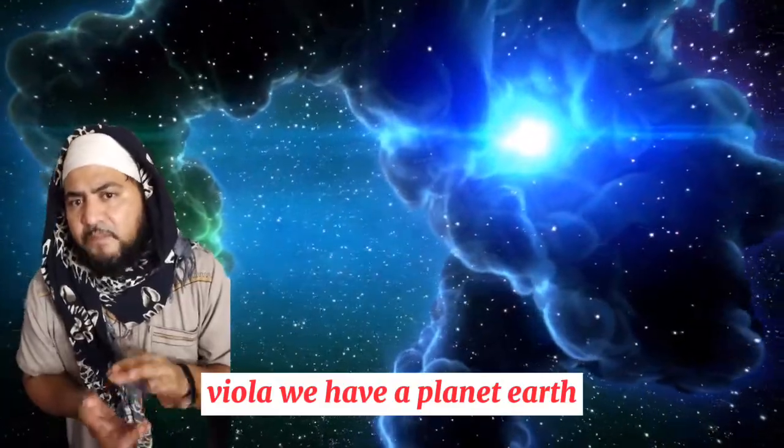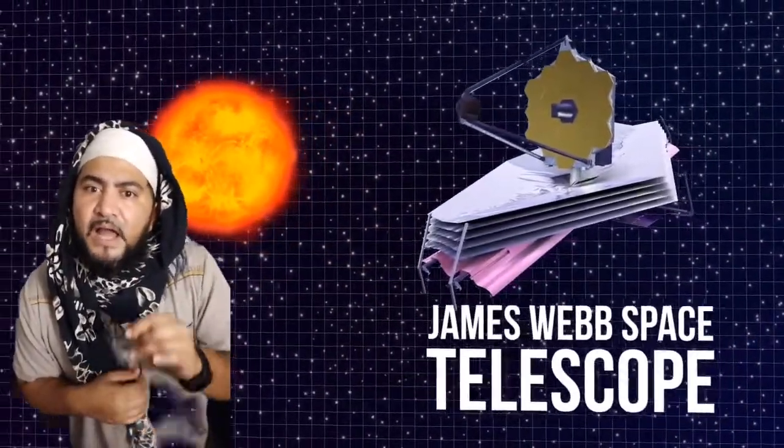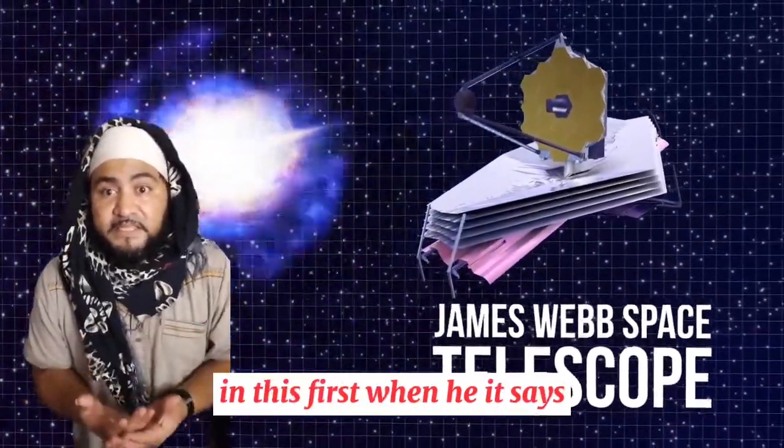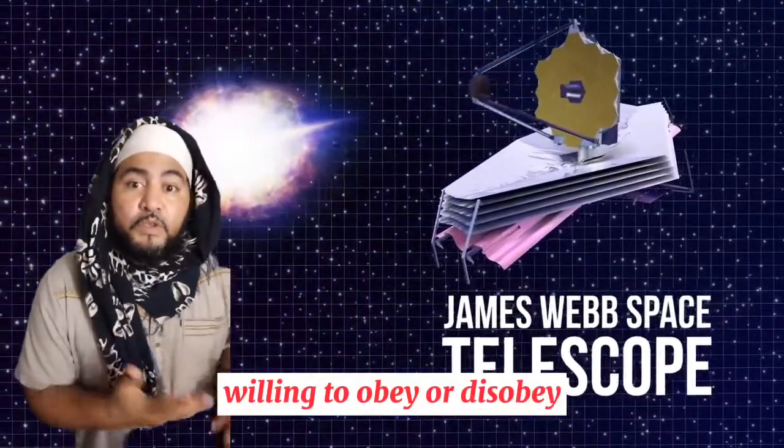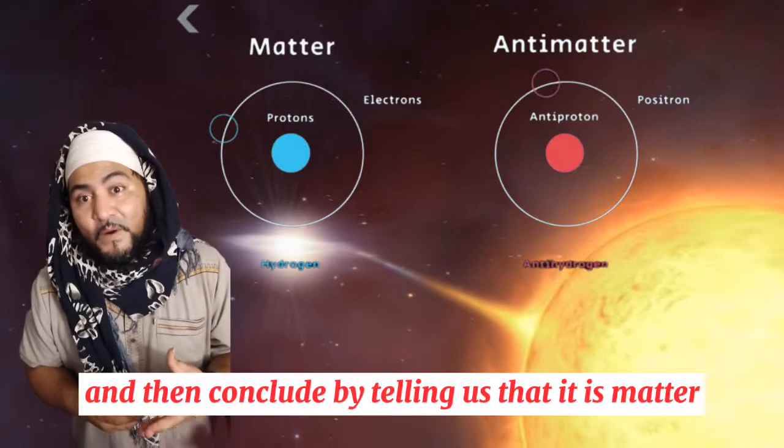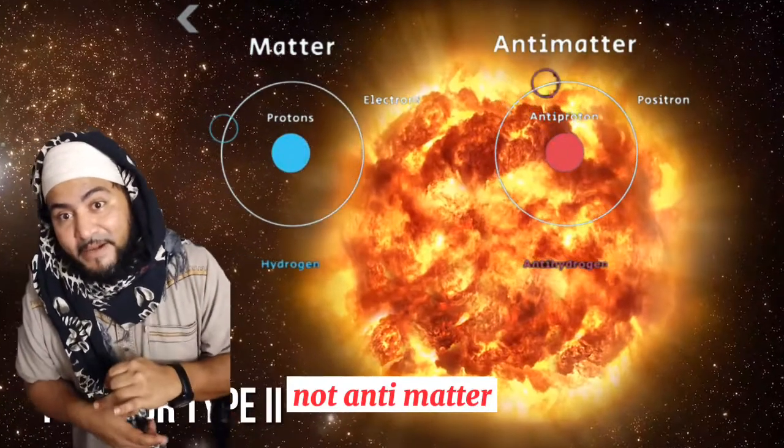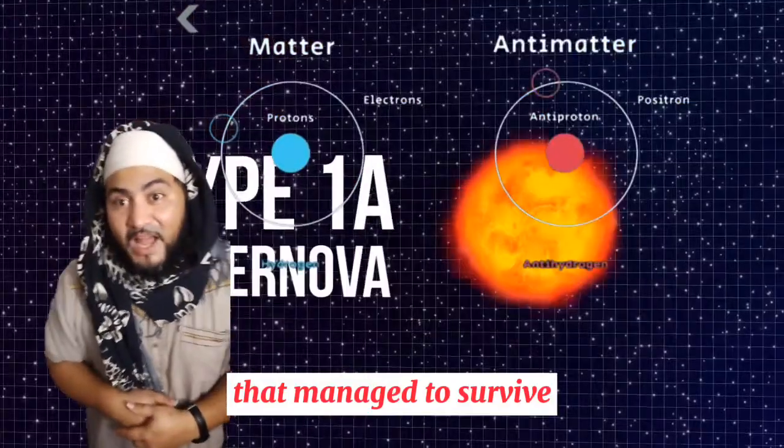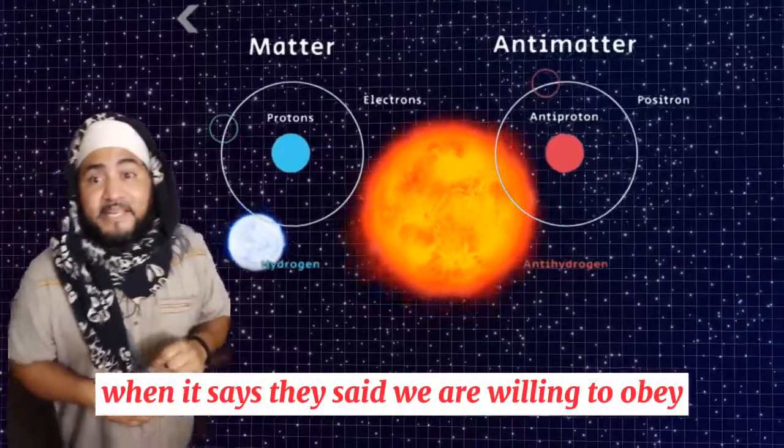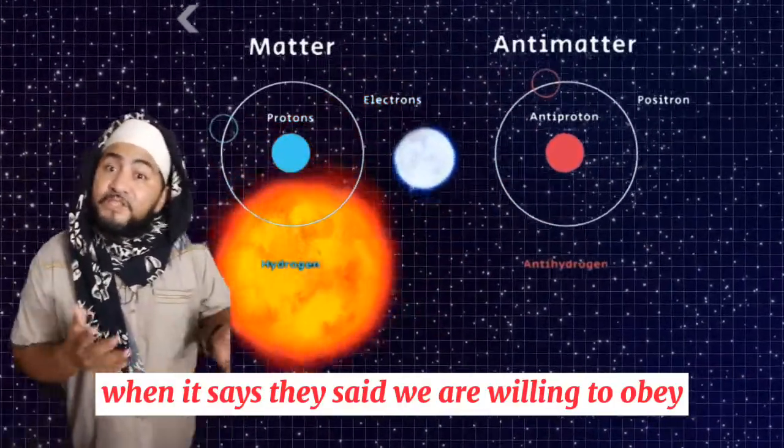After a hundred million years of the rocky embryo growing, we have planet Earth. The Quran even alludes to the matter and anti-matter that existed in the universe in this verse when it says 'willing to obey or disobey,' and then concludes by telling us that it is matter, not anti-matter, that managed to survive and still exists to this day when it says 'they said we are willing to obey.'